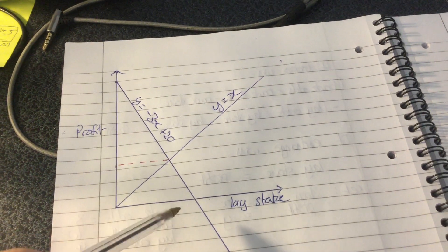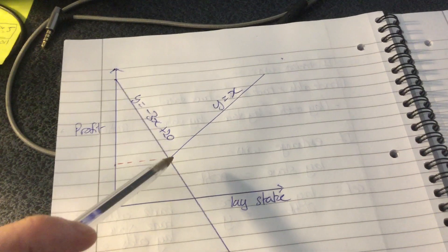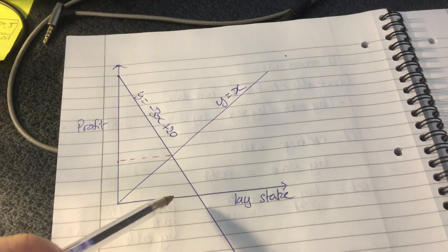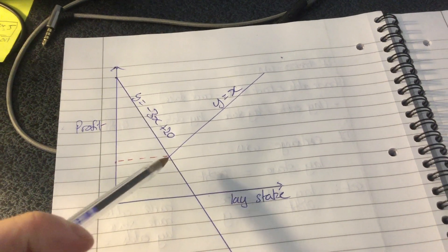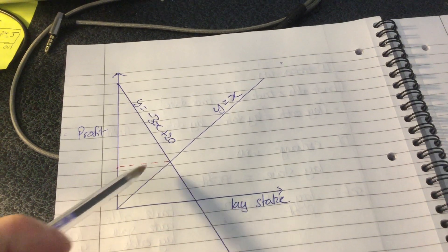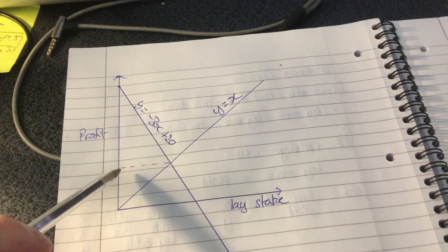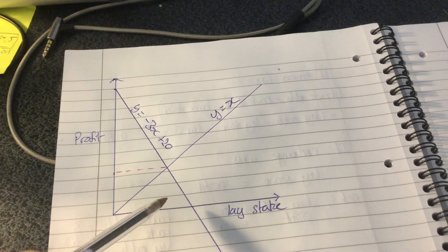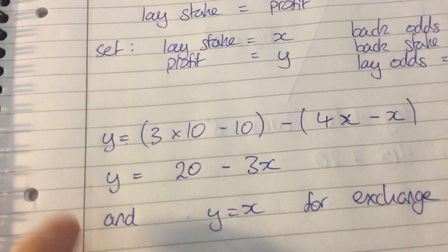And that is where these two lines meet. So what lay stake would give a profit equal to where these two lines meet here?